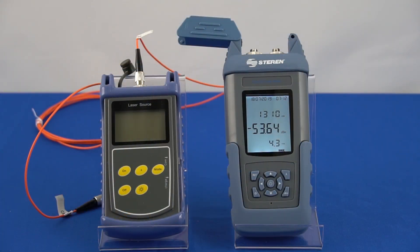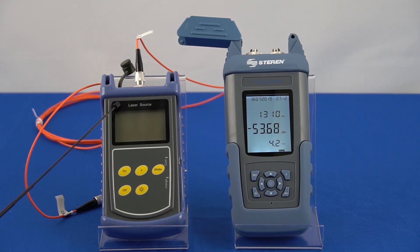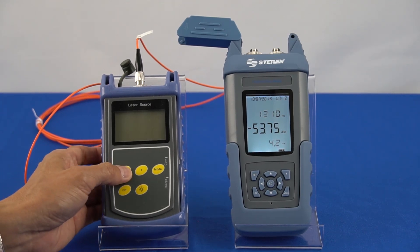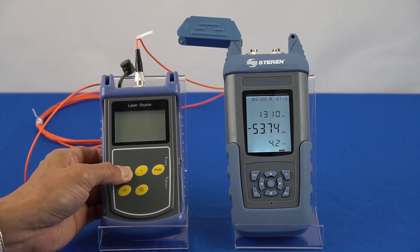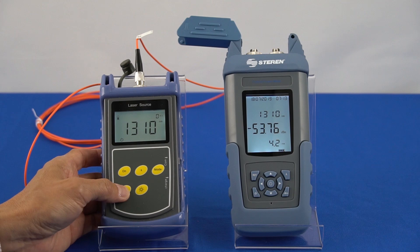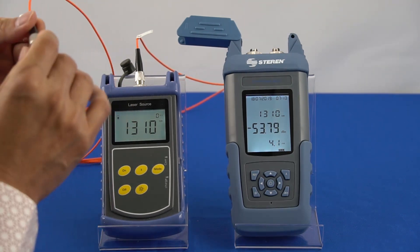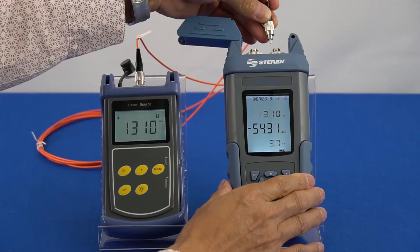To test the fiber cable, we will use the laser light source as a means to measure the optical power going through the FC fiber cable. First, turn on the laser light source and make sure the wavelength selected matches the wavelength on the optical power meter. Then connect a fiber patch cable from the laser light source to the optical power meter.